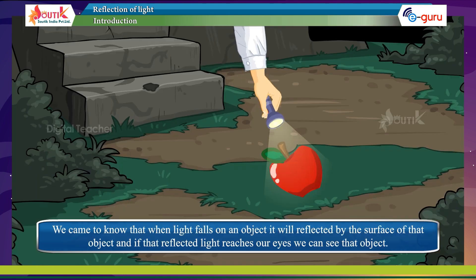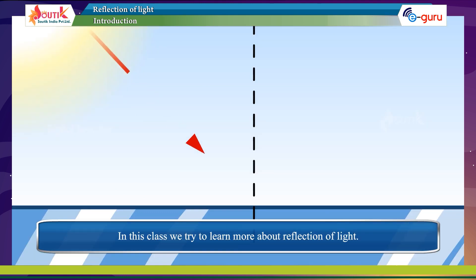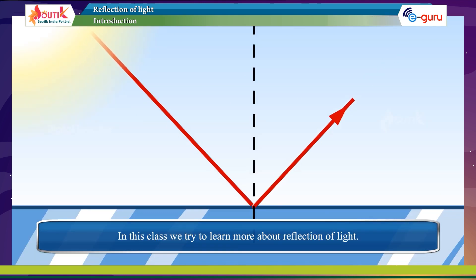We came to know that when light falls on an object, it will reflect off the surface of that object, and if that reflected light reaches our eyes, we can see that object. In this class, we will try to learn more about the reflection of light.